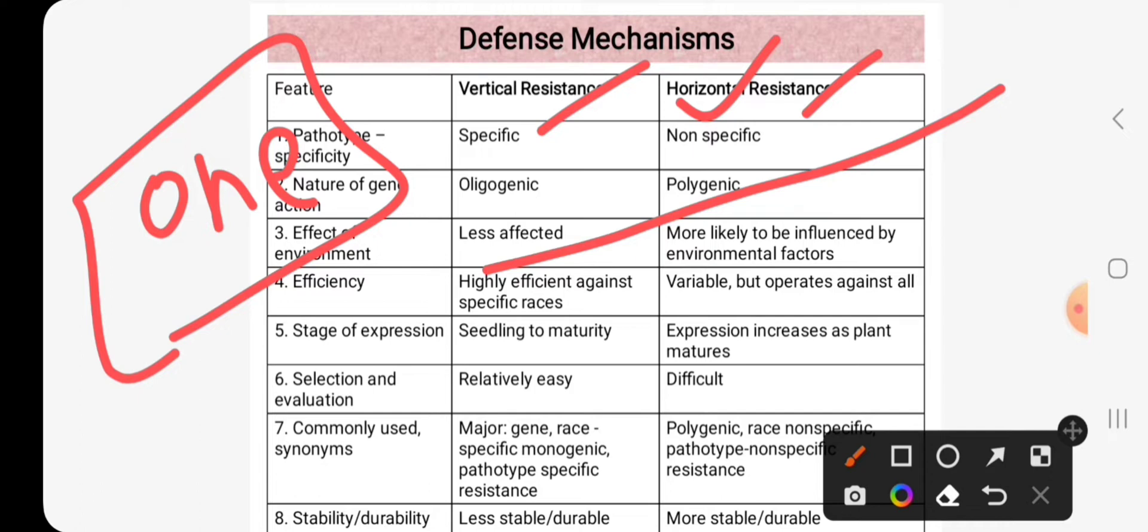Vertical resistance is known as pathogen specific resistance, while horizontal resistance is known as non-pathogen specific resistance. Vertical resistance is oligogenic, horizontal resistance is polygenic.